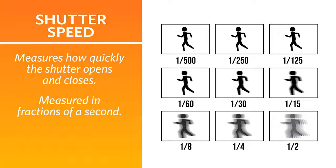The shutter of the camera opens and closes to allow light to reach the sensor. The amount of time that the shutter is open is known as shutter speed, and it is measured in fractions of a second. A larger denominator, such as 1/2000 or 1/4000, is a faster shutter speed.